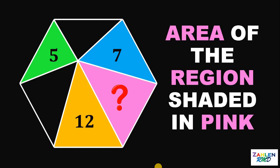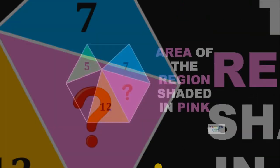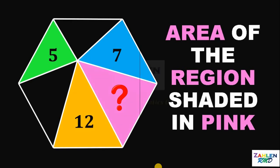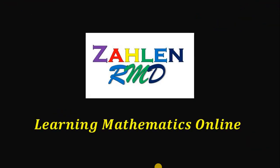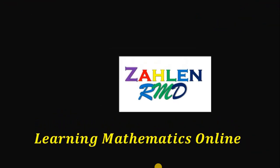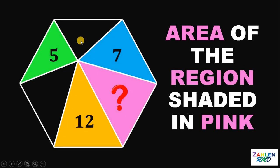Good day everyone, here's our math challenge for today. A regular hexagon is cut into 6 equal triangles, wherein one triangle measures 5 square units, another triangle measures 7 square units, and another triangle measures 12 square units. Our goal in this question is to find the area of the region shaded in pink.